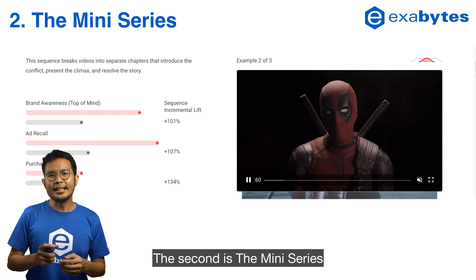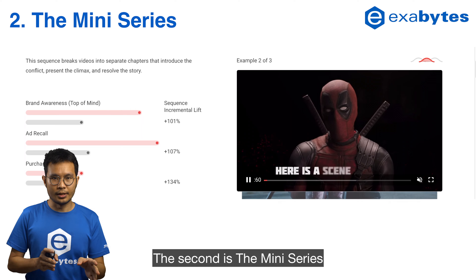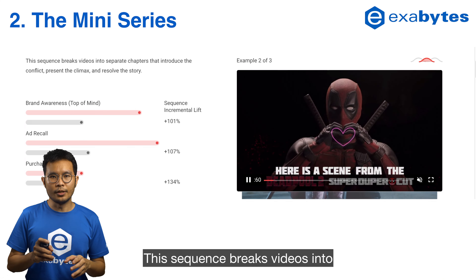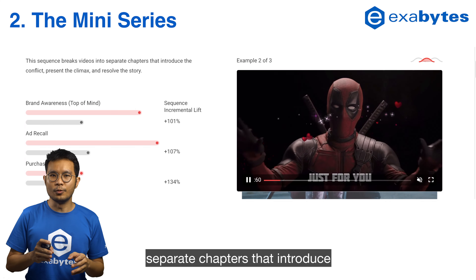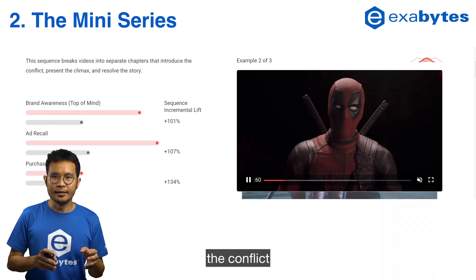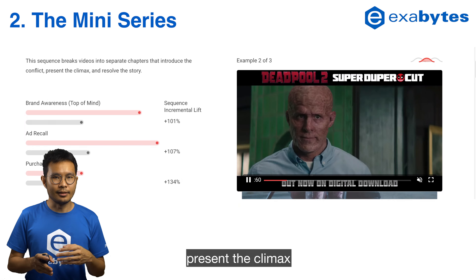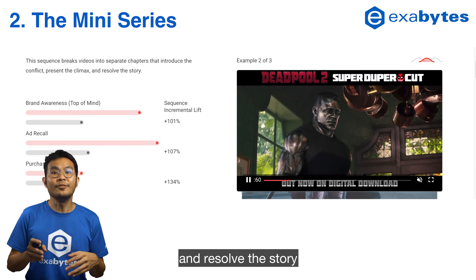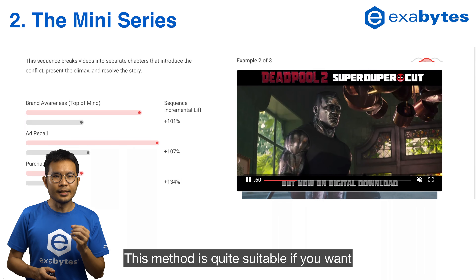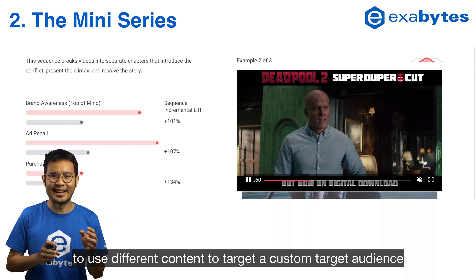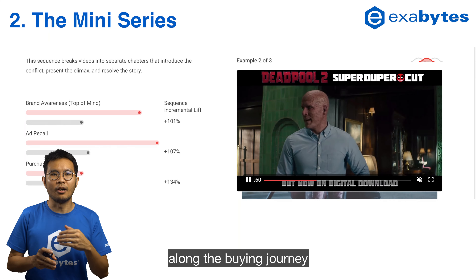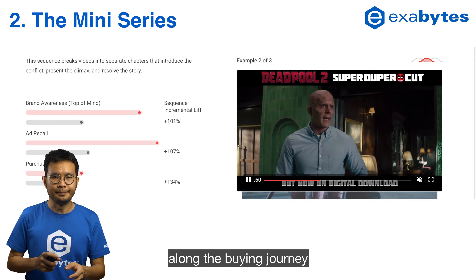The second is the mini-series. This sequence breaks videos into separate chapters that introduce the conflict, present the climax, and resolve the story. This method is quite suitable if you want to use different content to target a custom audience along the buying journey.